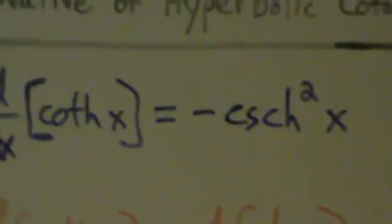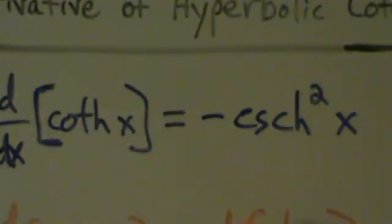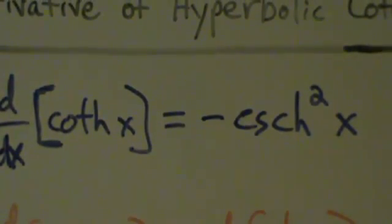And that's the proof — one of many ways of doing the proof — that the derivative of hyperbolic cotangent of x is equal to negative hyperbolic cosecant squared of x.